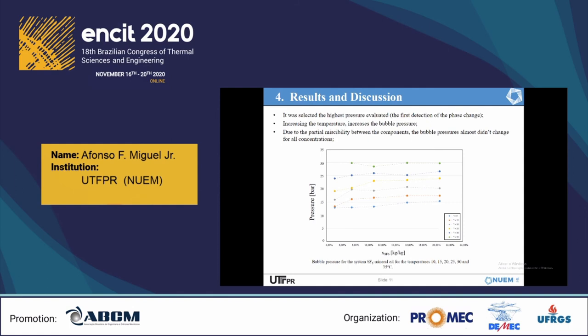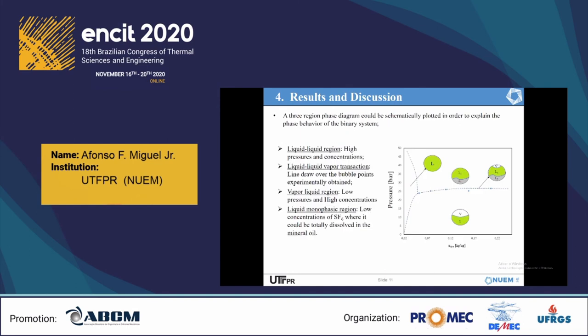Lower concentrations could not be studied due to experimental apparatus limitations. A three-region phase diagram could be schematically plotted in order to explain the phase behavior of the binary system. There you can see a liquid-liquid region for high pressures and concentrations, a liquid-liquid-vapor transition over the line drawn over the bubble points experimentally plotted, a vapor-liquid monophasic region for low pressures and high concentrations where the high-density loop would have to work, and also a liquid monophasic region with low concentrations of SF6 where it could be totally dissolved in the mineral oil.